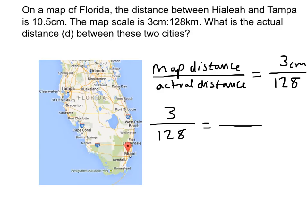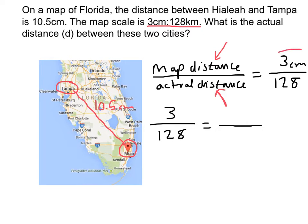Another way we use scale factor is on maps. On a map of Florida, the distance between Hialeah — near Miami — and Tampa is 10.5 centimeters. If the map's scale is 3 centimeters to 128 kilometers, what is the actual distance d between those two cities? We compare map distance to actual distance: every 3 centimeters on the map gives 128 kilometers of actual distance, so we use the ratio 3 to 128.